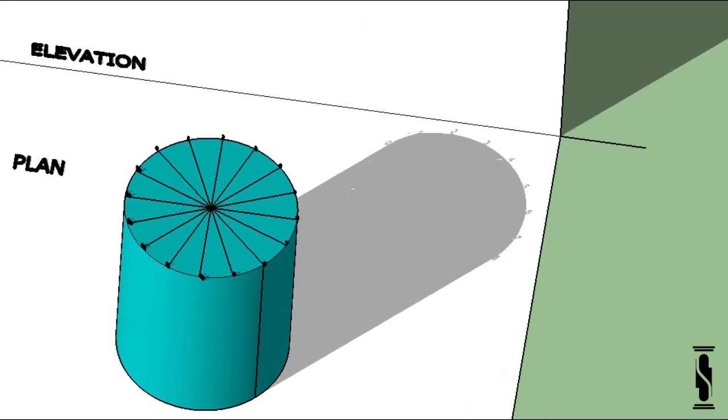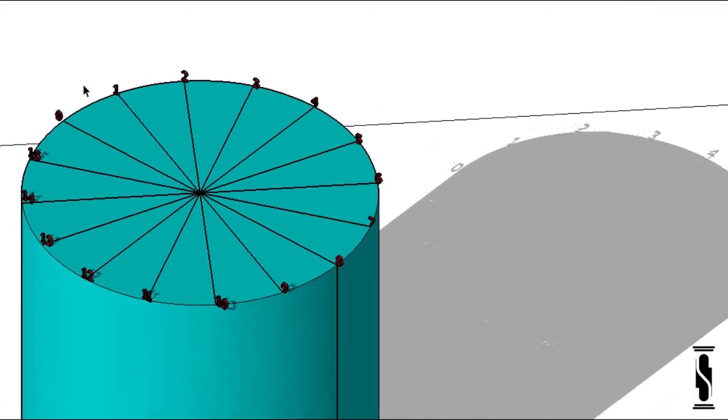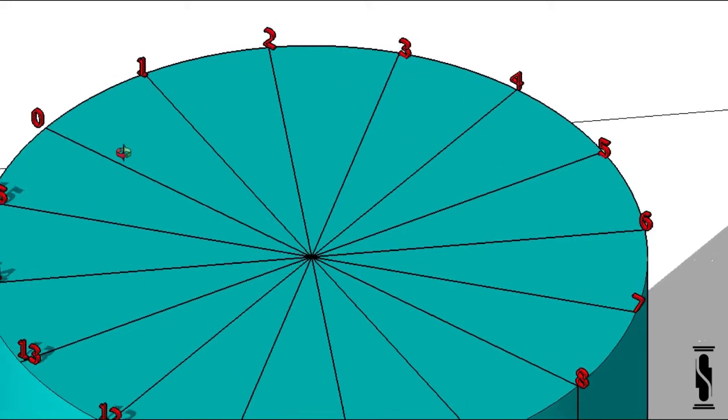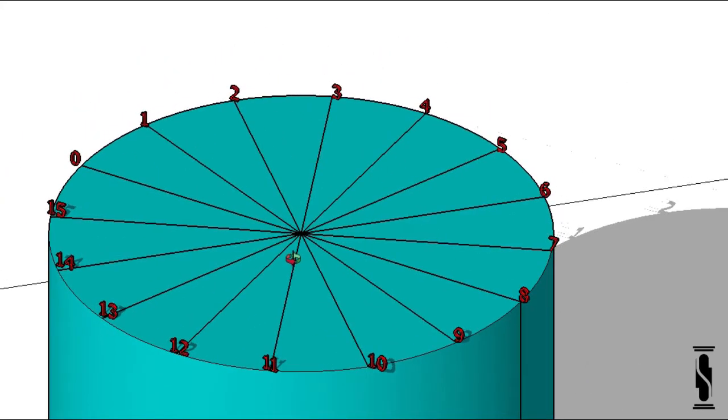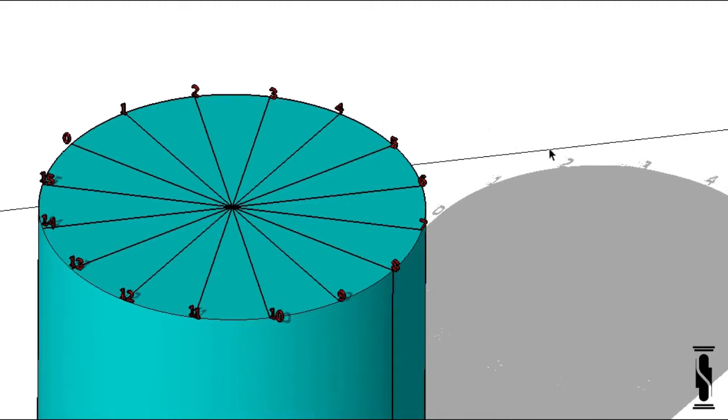Divide the upper base into 16 equal parts and name them 0 to 15. The shadow is generating only because of points 0 to 8. The diameter 0-8 is making an angle of 45 degrees with VP, which is perpendicular to the light ray falling on the cylinder. The shadow of points 9 to 15 is merging in between the shadow of points 0 to 8.